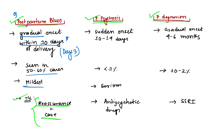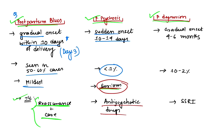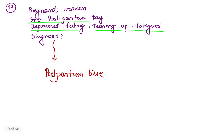Postpartum psychosis is very dangerous and severe — it may be injurious to both mother and baby. It is sudden onset, occurring within 10 to 14 days, seen in less than 1% of cases. Treatment requires antipsychotics. Postpartum depression is usually seen after 4 to 6 months of delivery, seen in 10 to 20% of cases, and treatment is SSRI — selective serotonin reuptake inhibitors such as fluoxetine.